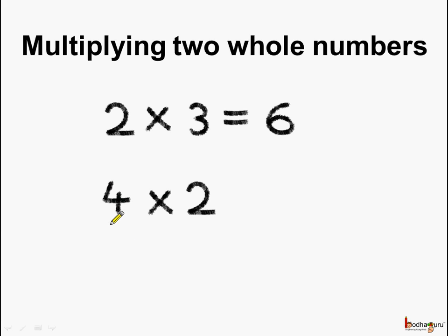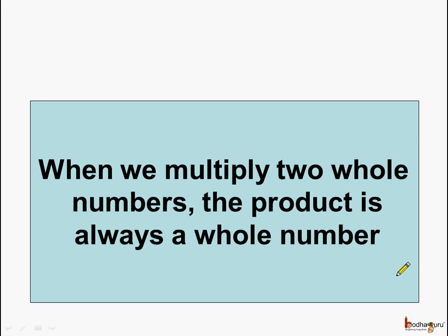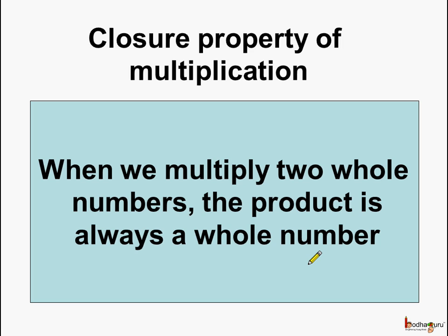Let us take another example. 4 multiplied by 2 is equal to 8. Here again the product of 2 whole numbers is a whole number. What do we learn from this? That the product of 2 whole numbers is always a whole number. When we multiply 2 whole numbers the product is always a whole number, and this property is called closure property of multiplication.